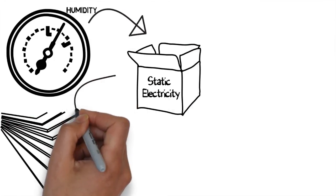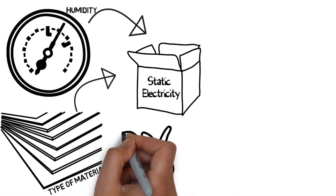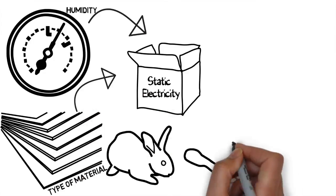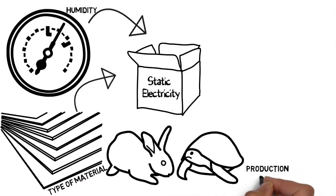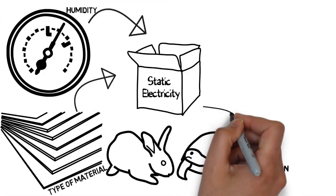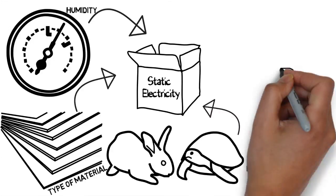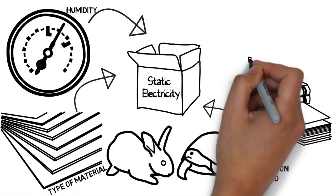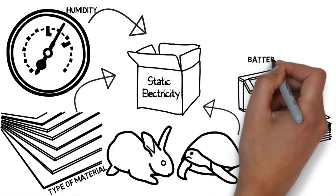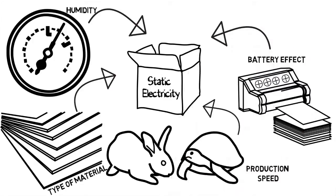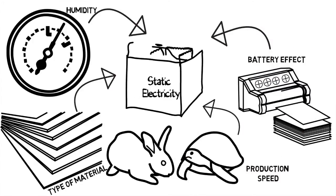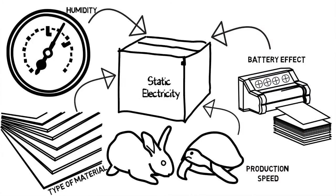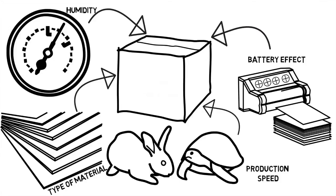The battery effect can be very dangerous and can result in really high voltages being generated. The type of material being processed will significantly affect the amount of static electricity, and with new materials being developed every day this represents a significant challenge. Production speeds are also increasing — the higher the speed, the more static is generated.